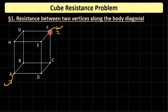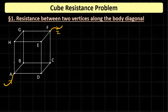The current I exiting from F has three paths from where current will merge to become I. From path symmetry, there is nothing to prefer one path over another, so all three paths are identical and the same current splits equally. That same current is I/3 on each of the three paths from A, and the same current I/3 merges along the three paths into F.